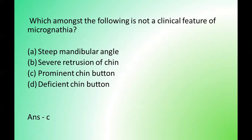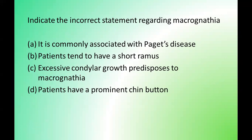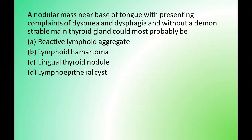Next question: indicate the incorrect statement regarding micrognathia. Options are: it is commonly associated with Paget's disease; patients tend to have a short ramus; excessive condylar growth predisposes to micrognathia; patients have a prominent chin button. The correct answer is option B — patients tend to have a short ramus. Next question: a nodular mass near the base of tongue with dyspnea and dysphagia and without a demonstrable normal thyroid gland could most probably be which of the following? Options are: reactive lymphoid aggregate, lymphoid hematoma, lingual thyroid nodule, lymphoepithelial cyst. The correct answer is option C — lingual thyroid nodule.